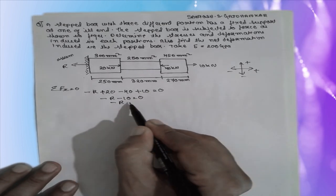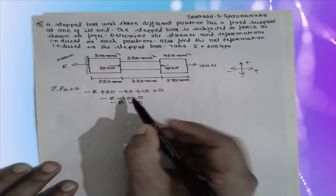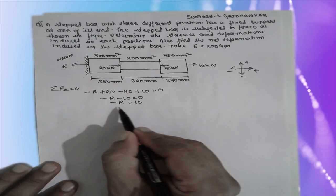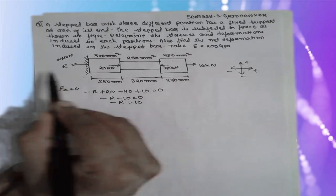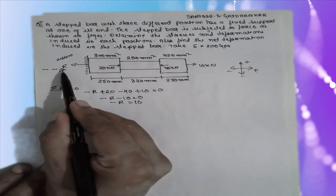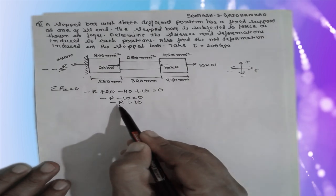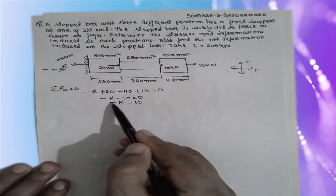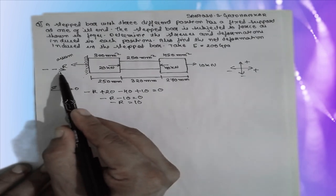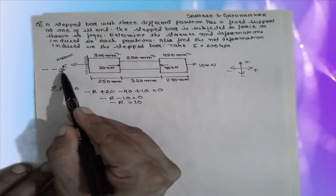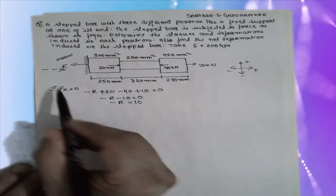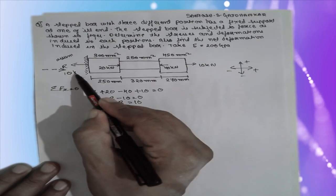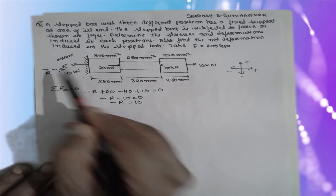Therefore, minus R equals 10. This negative sign indicates that the direction we assumed for R is wrong and we have to reverse it. That means R must act in the positive direction. So R equals 10 kilo Newton, acting in the corrected direction.